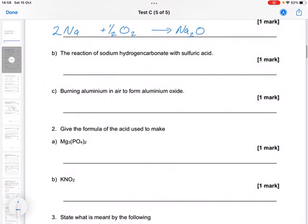Part B, the reaction of sodium hydrogen carbonate with sulfuric acid. So sodium is 1 plus, hydrogen is 1 plus, carbonate is 2 minus. Or actually, sorry, sodium is 1 plus, hydrogen carbonate is 1 minus. So we have that. With sulfuric acid, you just have to know this.